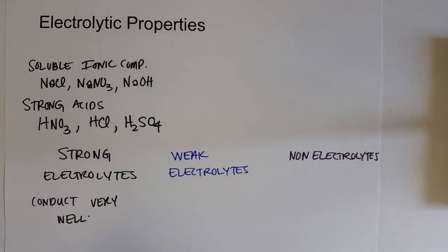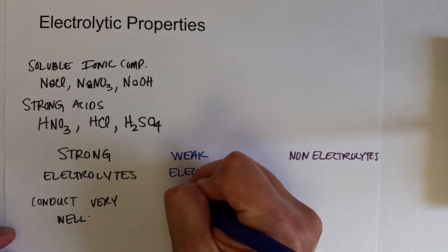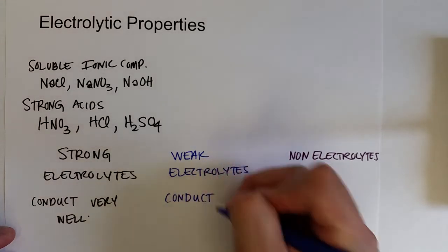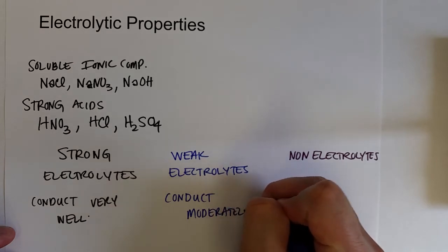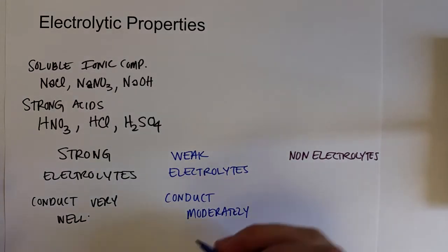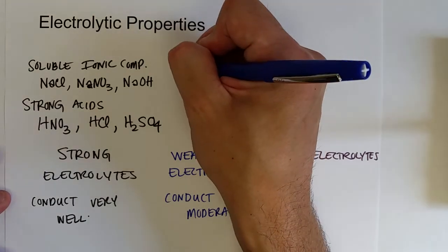Weak electrolytes conduct moderately because of course they do not produce 100% of their ions. And of course these examples are weak acids and bases.